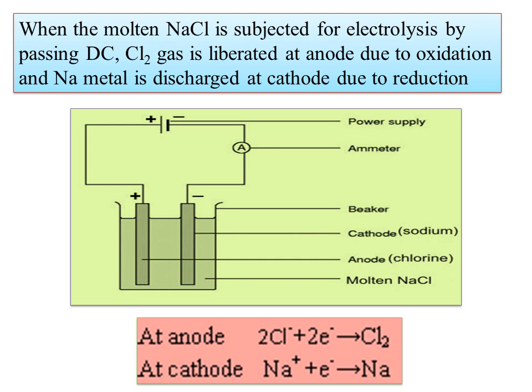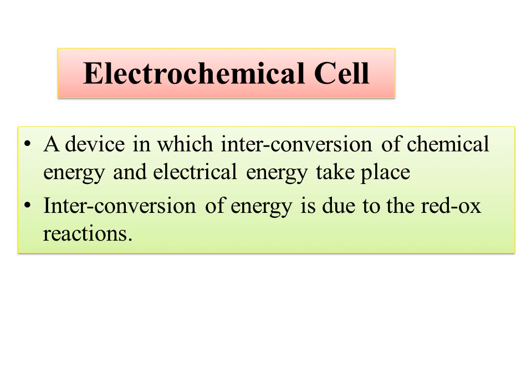This is the setup for electrolysis. We have molten sodium chloride in a beaker. They start moving in opposite directions. The apparatus where you set this up is called an electrochemical cell.